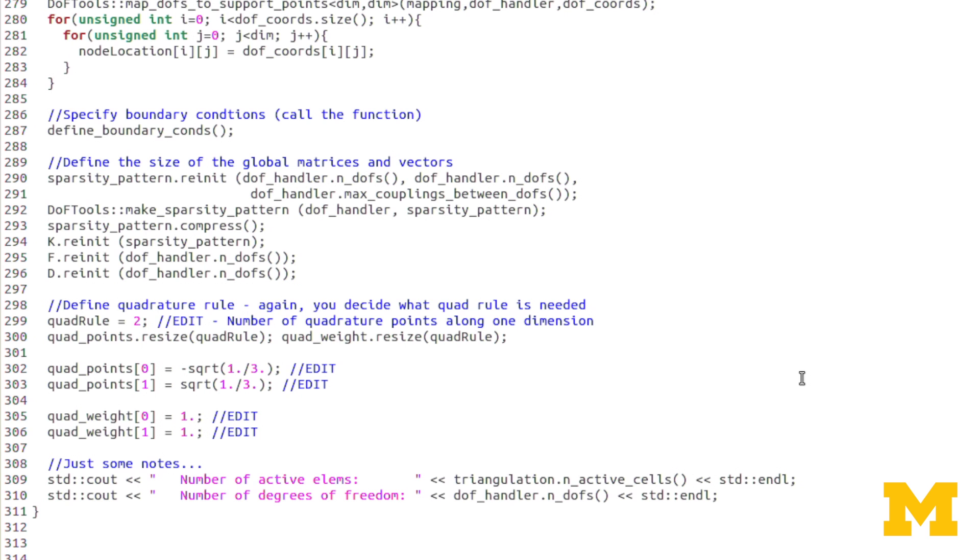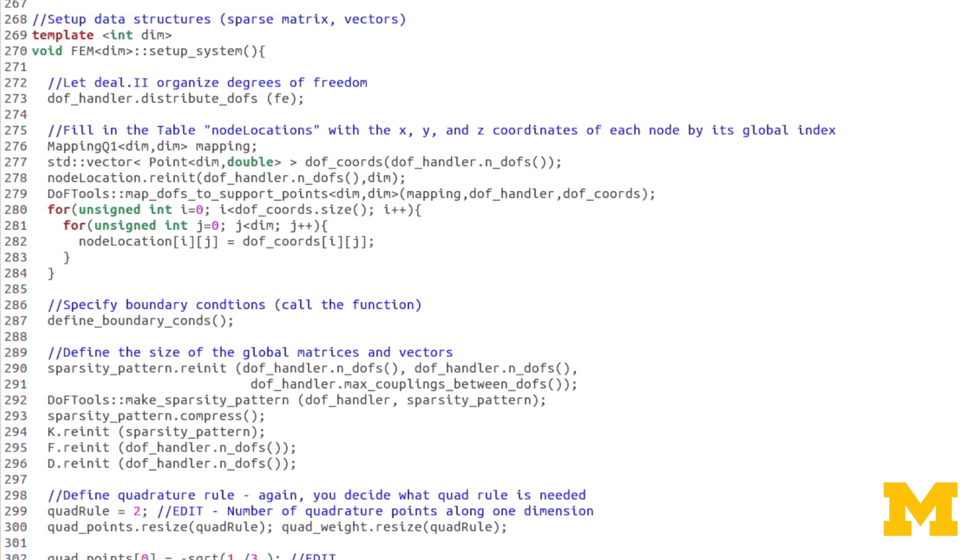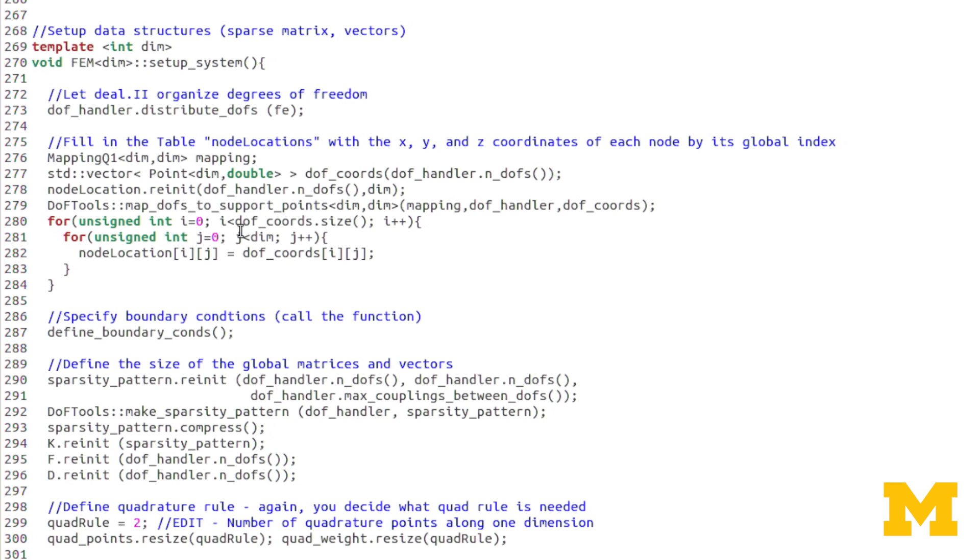Setup system is exactly the same. Any changes that would need to be made in setup system are taken care of by the fact that it's a template class, and so we use DIM a lot. For example, in this for loop, we use DIM, and so now we're looping up to three instead of two.